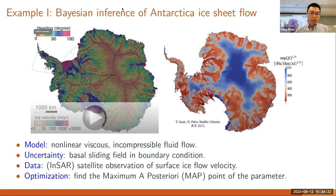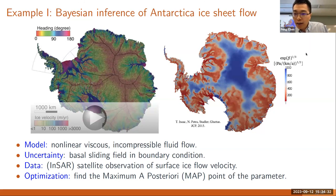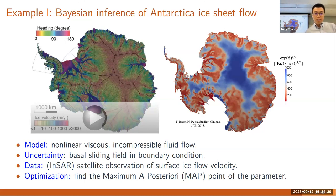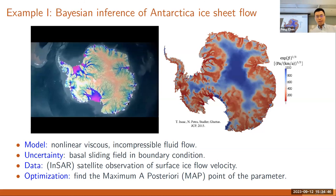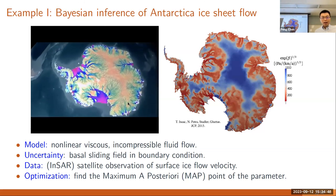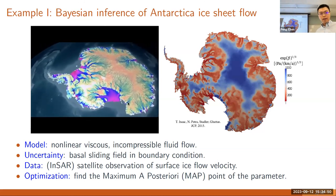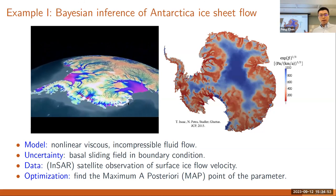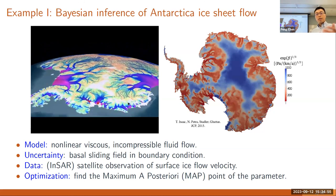The first example is about Bayesian inference of Antarctica ice sheet flow. From satellite data, we can observe essentially the velocity of the ice flow for Antarctica. There is evidence of accelerating ice sheet flow, possibly due to global warming. If the whole Antarctica ice sheet melted, there would be a very significant rise in sea level. We want to model this process and make predictions about the future.